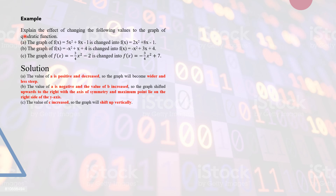This question asks us to explain the effect of changing the following values on the graph of the quadratic function. Part A: the graph of f(x) = 5x² + 8x − 1 is changed into f(x) = 2x² + 8x − 1. The first thing to note is that the coefficient of x (b) and the constant c do not change, whereas the coefficient of x squared (a) decreases from 5 to 2. Both are positive values.